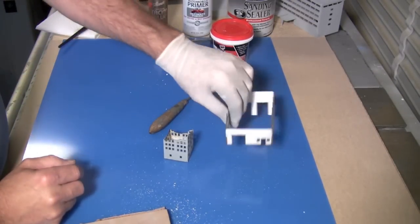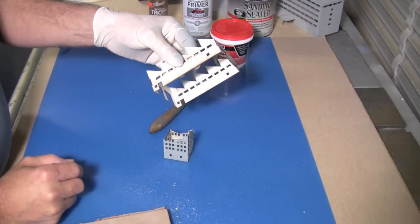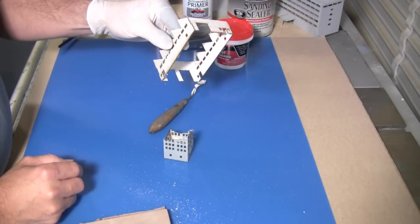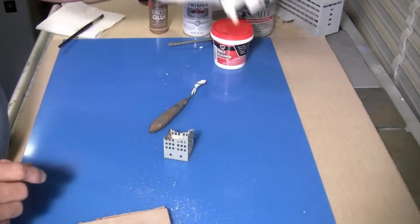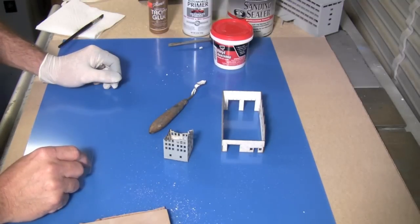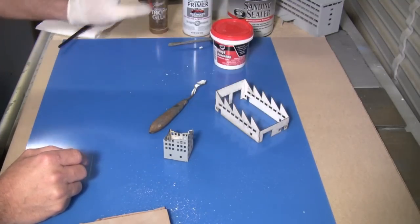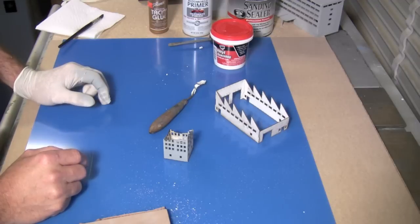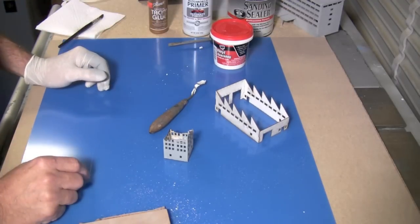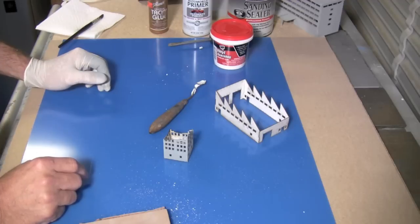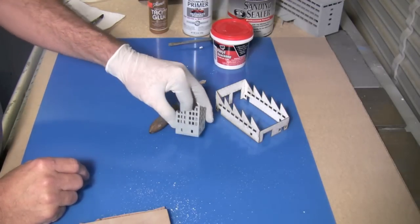All that being said, you could glue this together, grab a can of whatever color paint you want, and just spray it. Throw it down on your game board and start playing. And it'd be just fine. But if you're a little pickier, and you want to go through these extra steps, it really, as you can see, doesn't take long at all. It just takes an extra couple of minutes for each model. And I think it makes a big difference once you get them done.